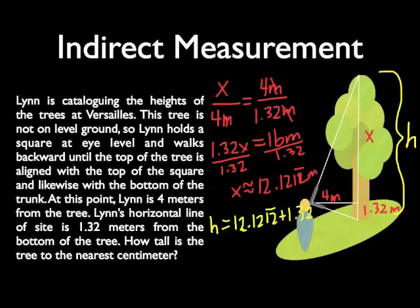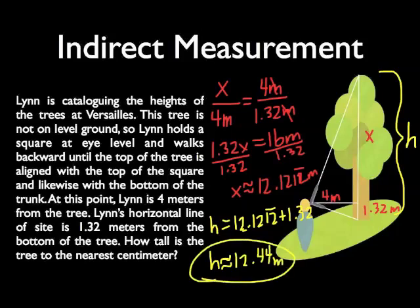And keep in mind, these are all meters. So that means our height is going to be about 13.44 meters. Notice that we have rounded to the second decimal place, which is the nearest centimeter.